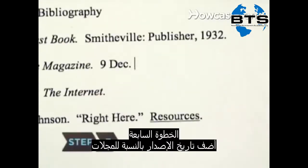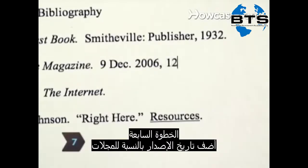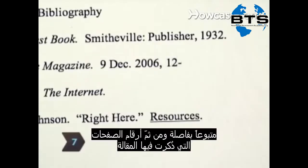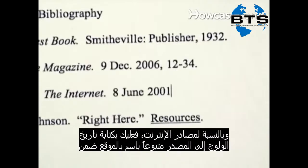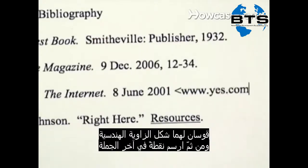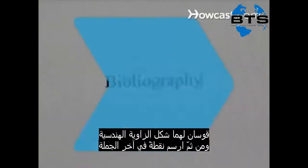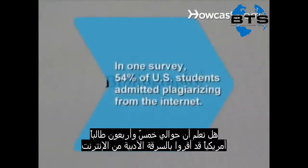Step 7. For a magazine, add the date of the issue, followed by a comma, and the pages where the article appears. For an internet source, put the date you accessed the source, followed by the URL in angle brackets, and with a period.